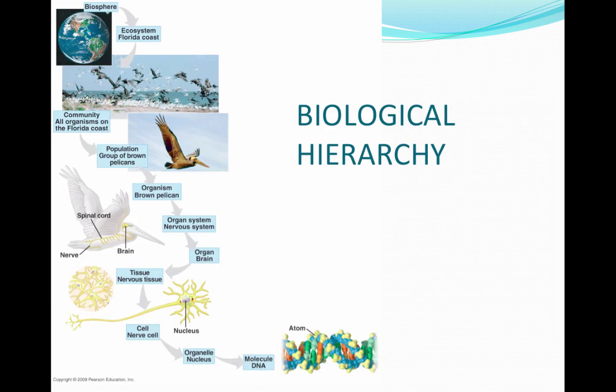In biology, there is a hierarchy. In ecology, we start with an organism, which makes up a population — a group of organisms of the same species. A community contains all the populations, or all the different species, within a given area. The ecosystem contains the community and all the nonliving factors, and the biosphere contains all the ecosystems on the planet.